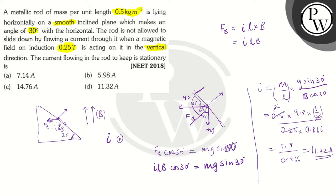Let's check the option. 7.14 is the first option. This is incorrect. 5.98 is also incorrect. 14.76 is incorrect. Option D says 11.32. So, this is the right answer. I hope you understood the solution I have given here. Final answer is option D. Thank you very much.